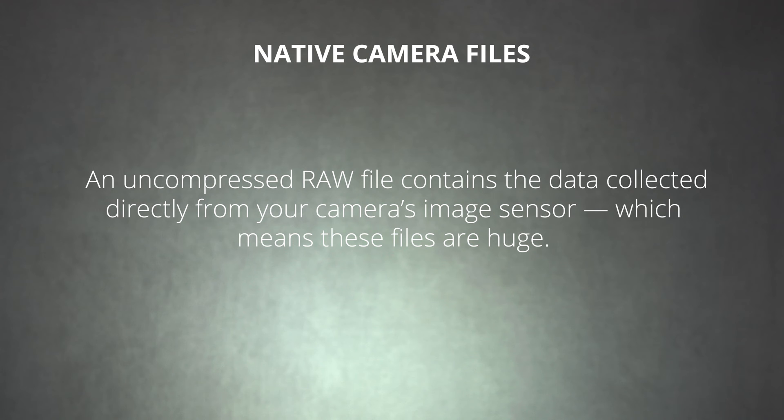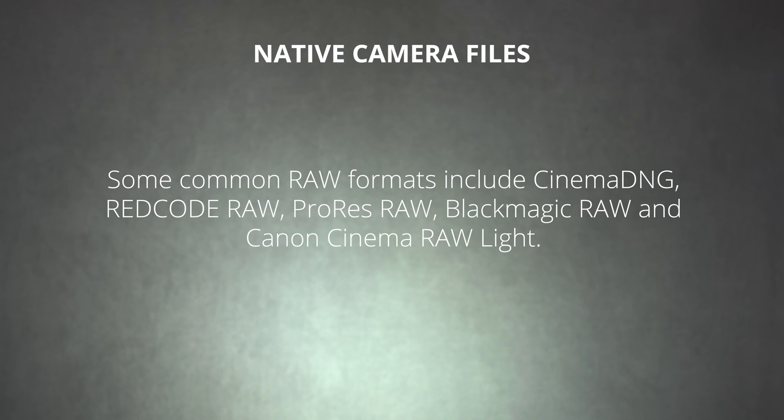Raw recording is another option featured in some cameras, especially high-end cinema cameras. An uncompressed RAW file contains the data collected directly from your camera's image sensor, which means these files are huge. However, you are more likely to encounter compressed RAW files, which take that RAW sensor data and compress it into a more manageable file size — though it will still be pretty big in most cases. Some common RAW formats include Cinema DNG, Red Code RAW, ProRes RAW, Blackmagic RAW, and Canon Cinema RAW Lite.